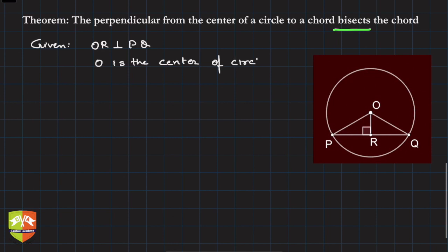To prove: PR is equal to RQ. Then we will say that OR bisects the chord.